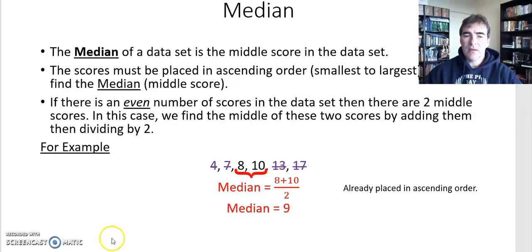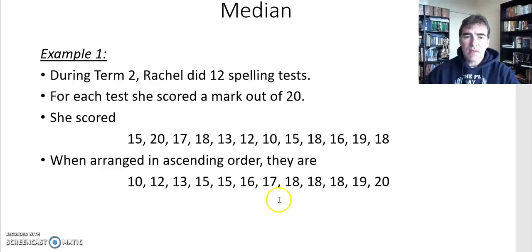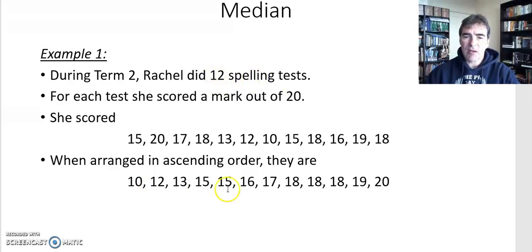Now let's relate finding the median back to our example with Rachel. These are her 12 spelling test results out of 20. As you can see they're not placed in ascending order, so we need to do that first. When we do, we have our smallest score of 10 and our highest score of 20. We now have them placed in ascending order. Just remember, because there are 12 spelling tests there are 12 results, so we should end up with two middle scores.